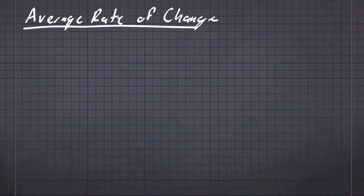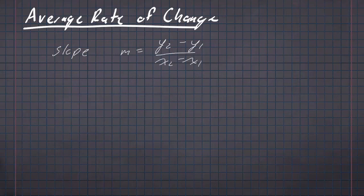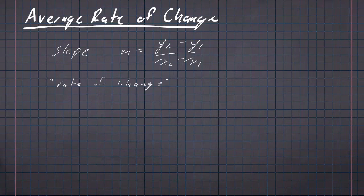Let's dive in here with the idea of average rate of change. You're familiar with the idea of the slope of a line: y2 minus y1 over x2 minus x1. One interpretation we use for slope is that it gives the rate of change of a function as things progress. Lines are nice to work with because they have a constant rate of change.